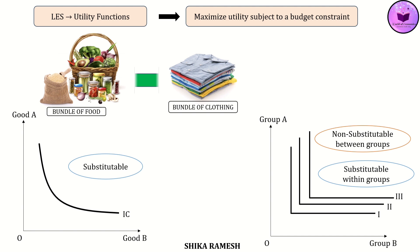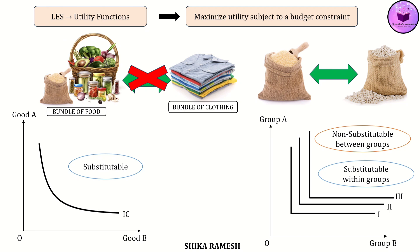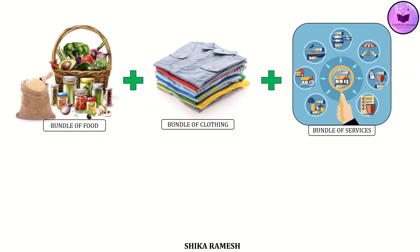This means food as a category cannot be substituted with the clothing category. But within the food category alone, rice can be substituted for wheat; or within clothing alone, shirts can be substituted for jeans, etc. The utility function in LES is additive, meaning the total utility is simply the sum of the utilities of each group — food, clothing, durables, household operations, and services, etc.